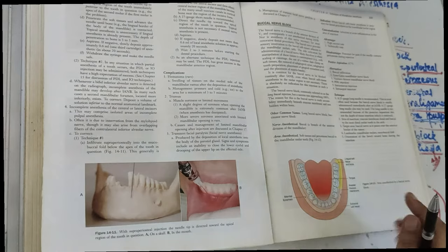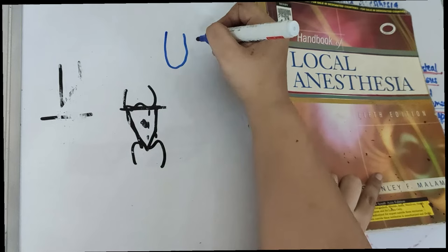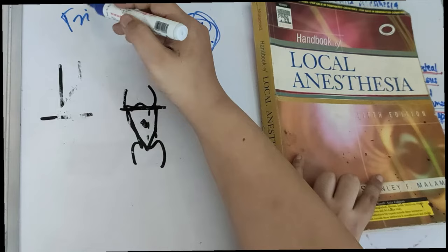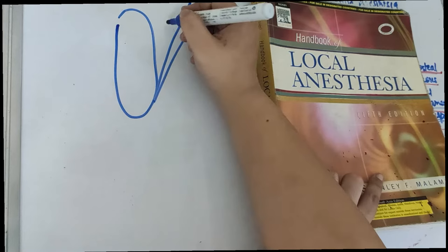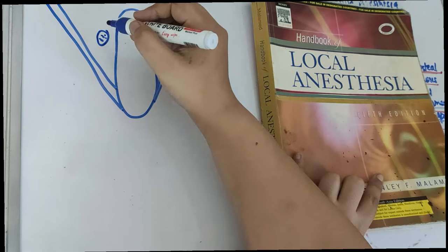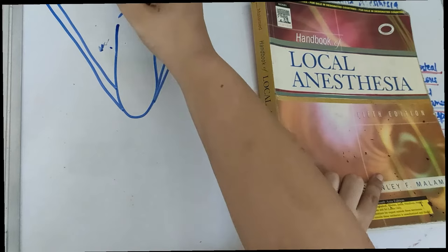The complication of the inferior alveolar nerve block: hematoma is very rare, but trismus can occur. If anything impinges the masseter or medial pterygoid muscle, it will lead to trismus. The lingual nerve is also present in the pterygomandibular space — we are targeting the inferior alveolar nerve block in this space.